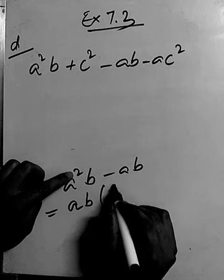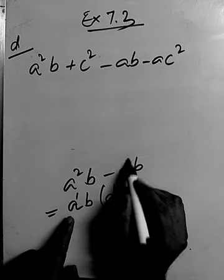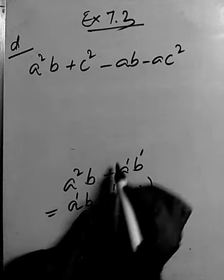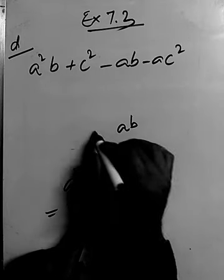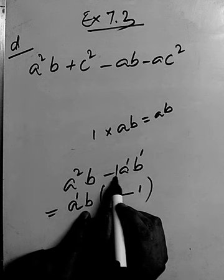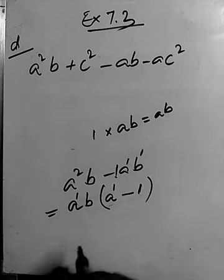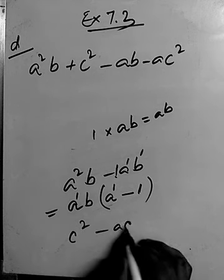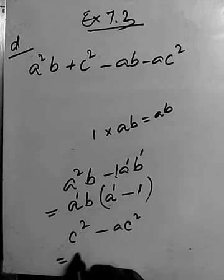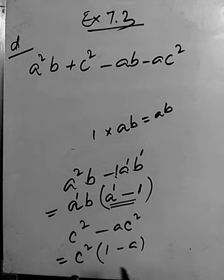From the first and third terms, A squared B and minus AB, we can take AB as the common factor. The power of A is two; we take one, leaving one more, so we get AB(A minus 1). From the second and last terms, C squared minus AC squared, we take C squared as the common factor, giving C squared(1 minus A).